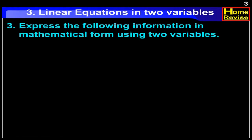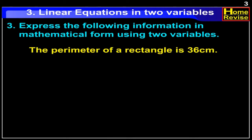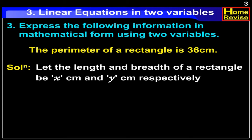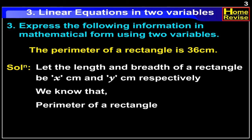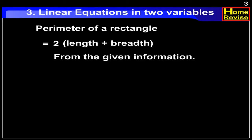Express the following information in mathematical form using two variables. The perimeter of a rectangle is 36 cm. Solution: Let the length and breadth of the rectangle be x cm and y cm respectively. We know that the perimeter of a rectangle is equal to 2 into (length + breadth). Therefore, from the given information, we have 2 into (x + y) is equal to 36.